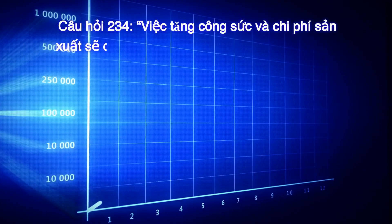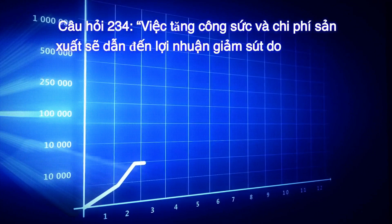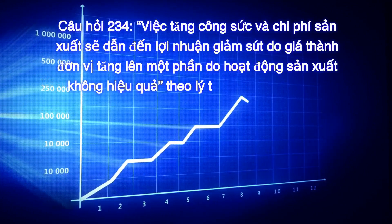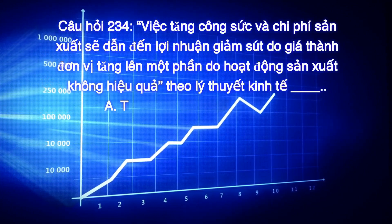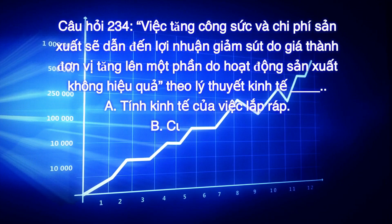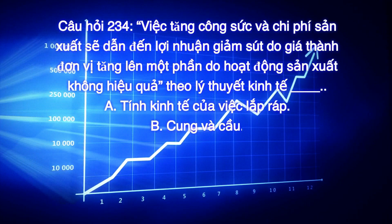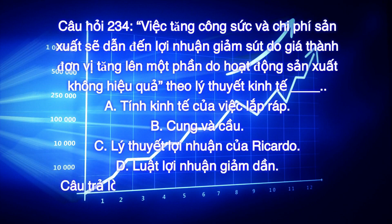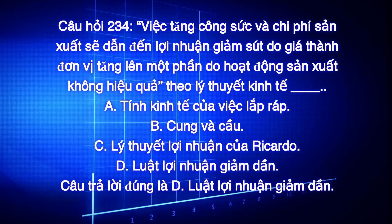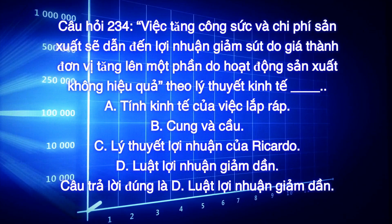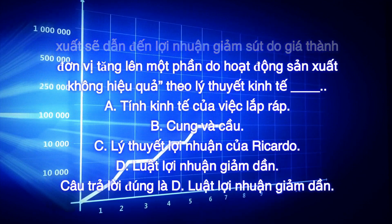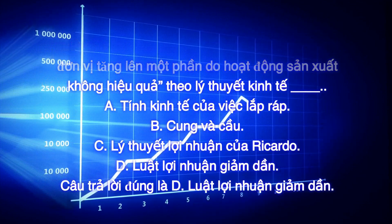Câu hỏi 234. Việc tăng công sức và chi phí sản xuất sẽ dẫn đến lợi nhuận giảm xuất do giá thành đơn vị tăng lên một phần do hoạt động sản xuất không hiệu quả theo lý thuyết kinh tế. A. Tính kinh tế của việc lắp ráp. B. Cung và cầu. C. Lý thuyết lợi nhuận của Ricardo. D. Luật lợi nhuận giảm dần.